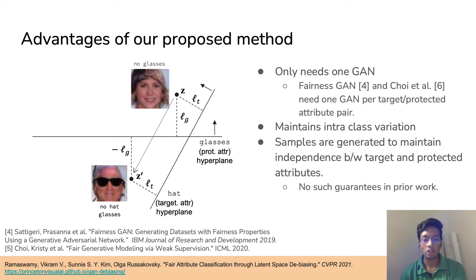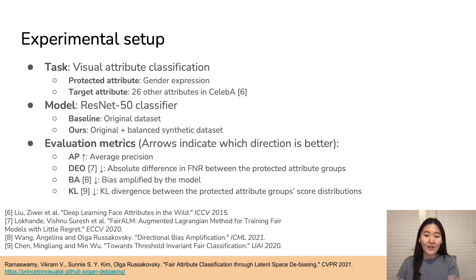I'm now going to pass it on to Sunny to talk about the experimental setup and results. Hi everyone, I'm Sunny. The goal of our experiments is to understand how a visual attribute classifier performs when trained with a balanced synthetic dataset created with our augmentation method. To do so, we train classifiers for 26 attributes in the CelebA dataset and measure how much gender bias each classifier has.